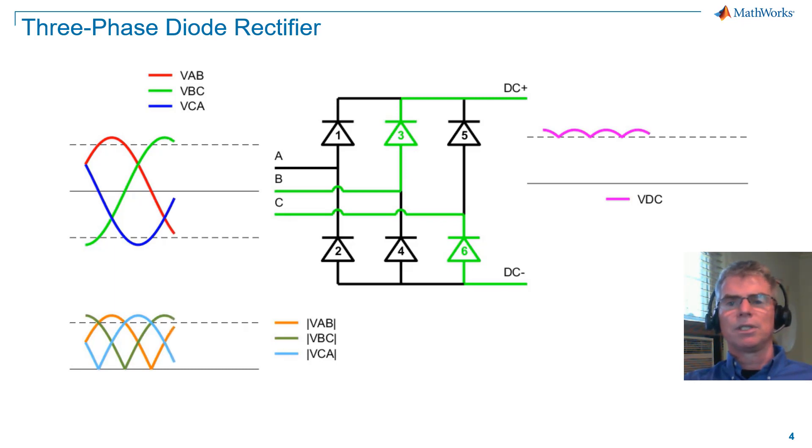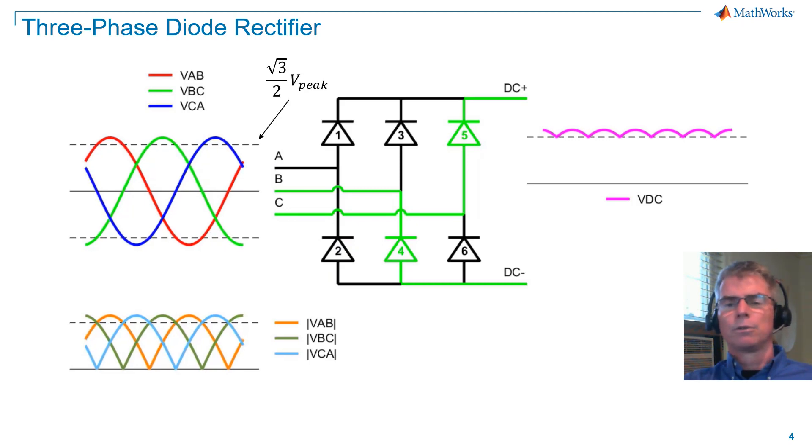You can see the switching sequence in the animation, which I have color coded as a function of the line voltage. There are three observations. First, the diodes will conduct when a line voltage exceeds square root of three over two of the peak line voltage magnitude. So why is that?